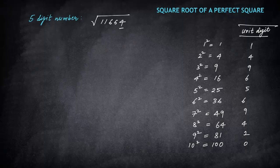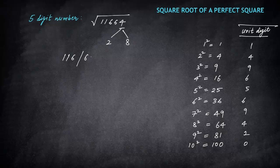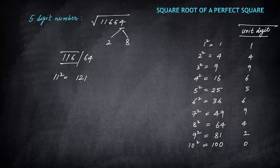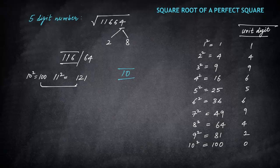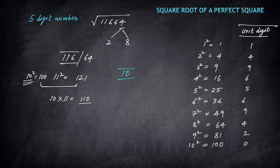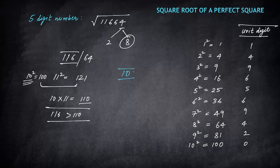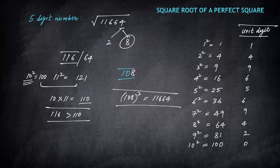Another five-digit example: √11664. Unit digit is 4, so it's either 2 or 8. Split to get 116. Since 116 lies between 100 (10 squared) and 121 (11 squared), the hundreds and tens place is 10. Step 3: 10 × 11 = 110. Since 116 is greater than 110, pick the bigger number — 8. The answer is 108, and 108 squared is 11664.